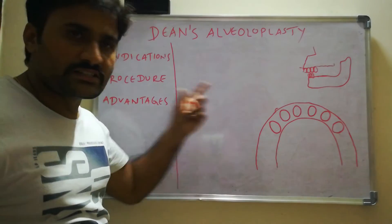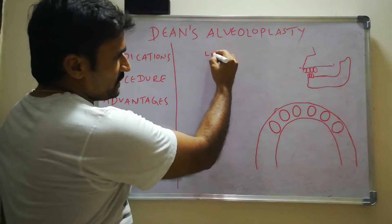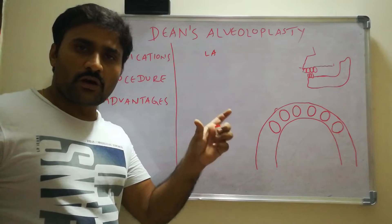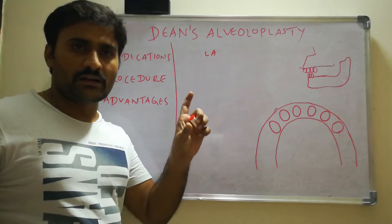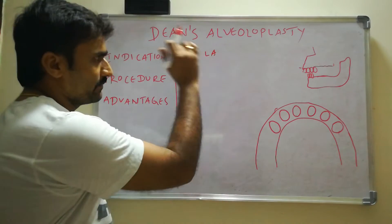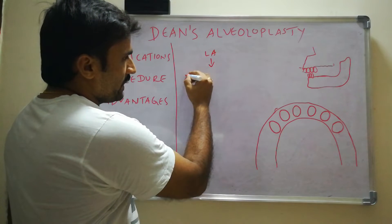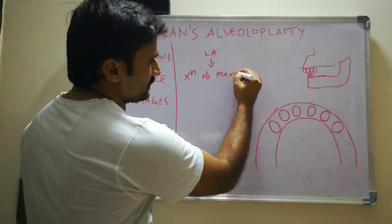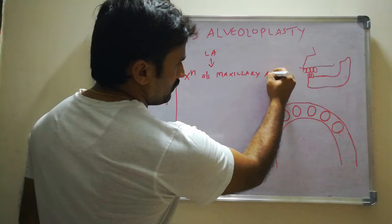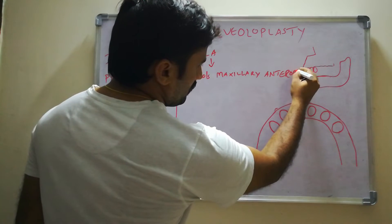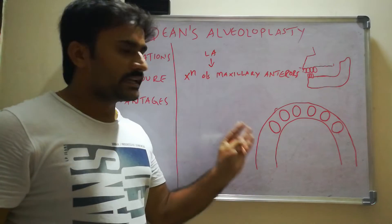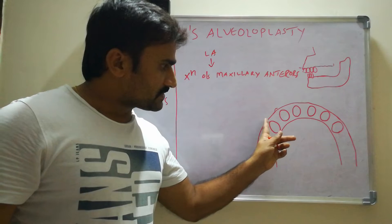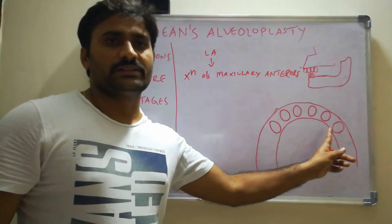Coming to the surgical procedure. The first step is to give local anaesthesia — bilateral infraorbital nerve blocks are given. The next step is extraction of the maxillary anteriors, usually canine to canine. As you can see in this diagram, maxillary anteriors from one canine to another canine are extracted.